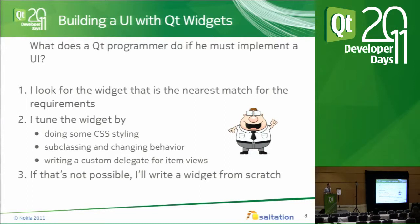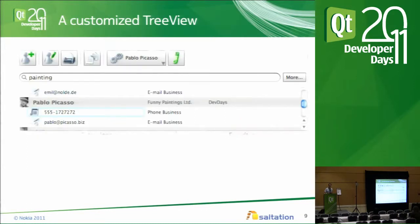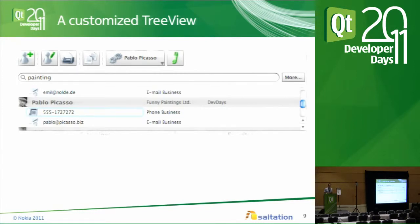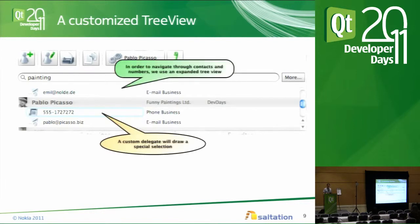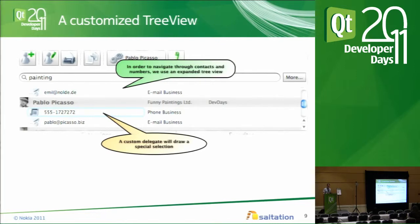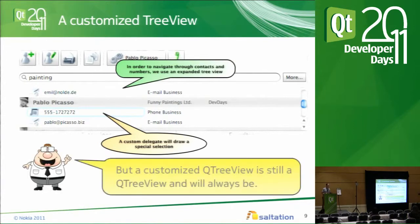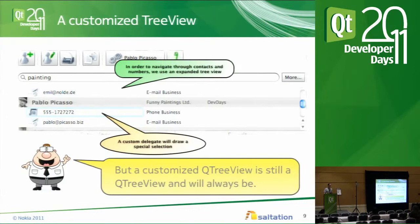And if all that is not possible, of course you can always write a new widget from scratch. For example, the tree view I was talking about — it does not really look like a tree view, but it's based on a tree view. We made some CSS styling with the currently selected entry, or maybe it was even a custom delegate. We use a tree view and a custom delegate to draw a special selection — in this case just a rounded border. However much work you put into customizing a tree view, a tree view will still be a tree view, so if you want something else, you must write a custom widget.